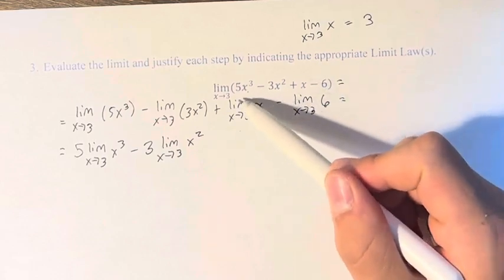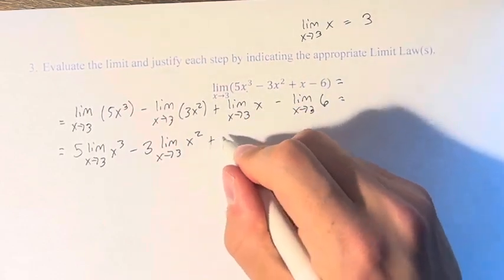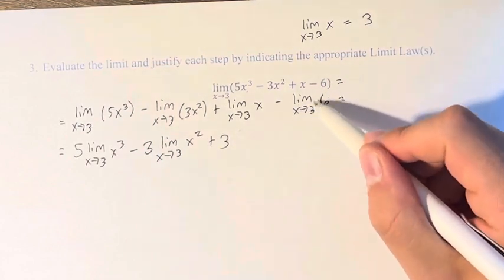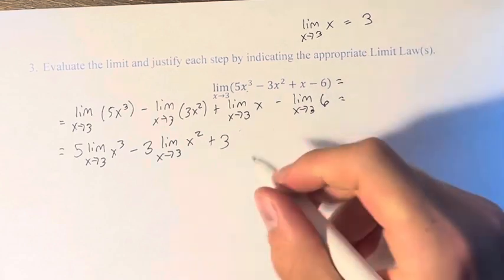And just like we saw up here, the limit as x approaches 3 of x is just 3, so this is plus 3. And then the limit as x approaches 3 of 6, no matter what x is equal to, 6 is still equal to 6, so this is minus 6.